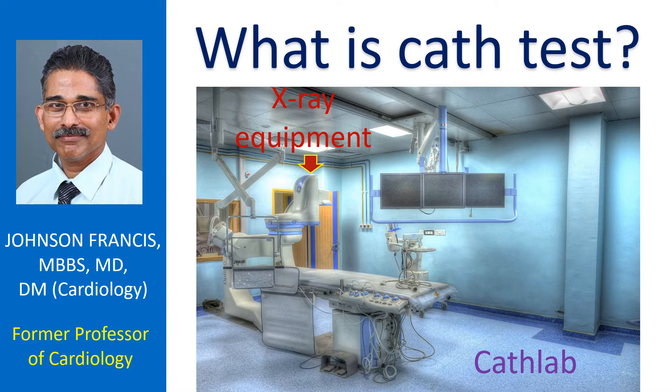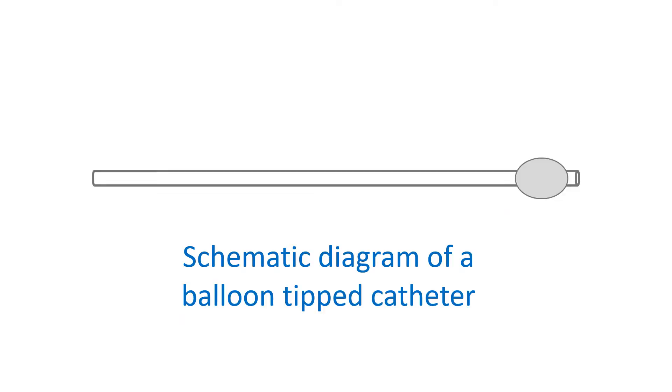The catheters are guided through the blood vessels into the heart using live x-ray imaging — image intensifier fluoroscopy. Sometimes echocardiography, ultrasound imaging of the heart, may also be used to guide the catheter within the heart.